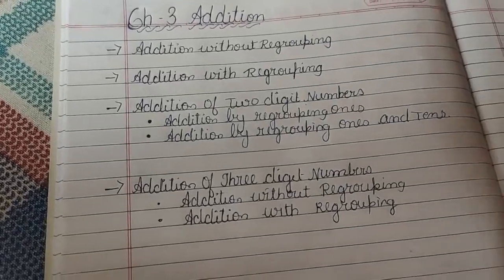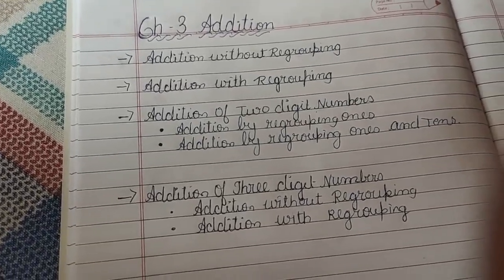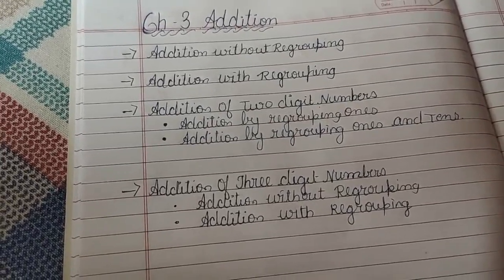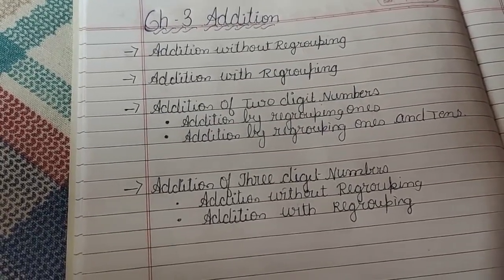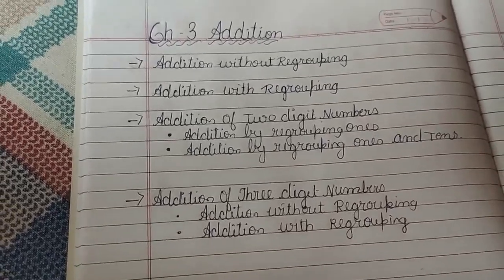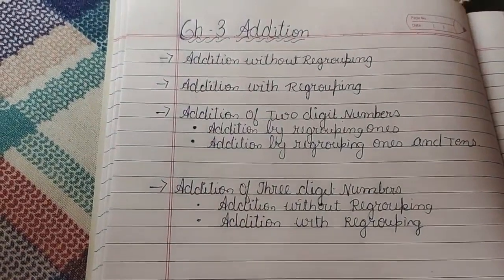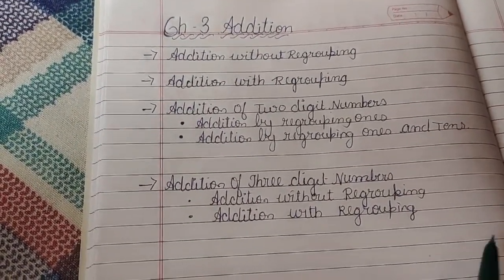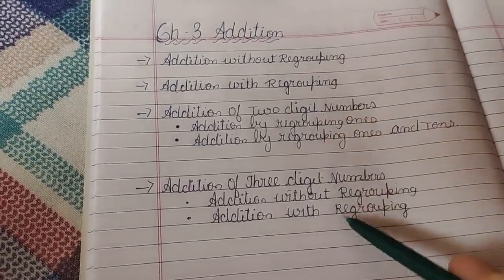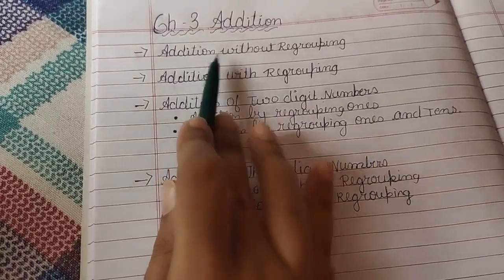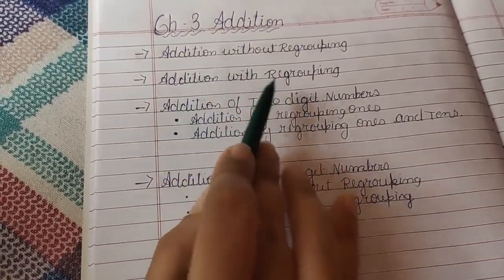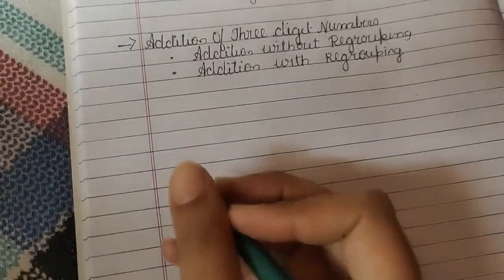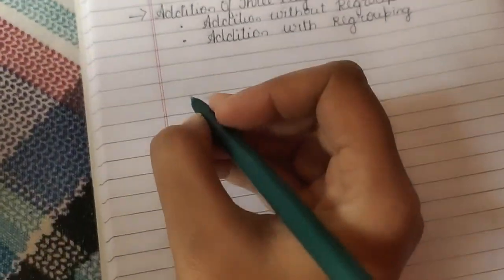So come, let's understand the rules of addition. Chapter number 3 is divided into three steps. First, addition without regrouping, and addition with regrouping. Now we will see the concept of addition without regrouping.